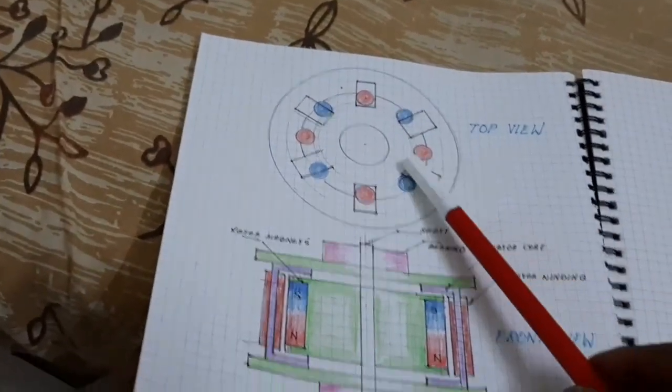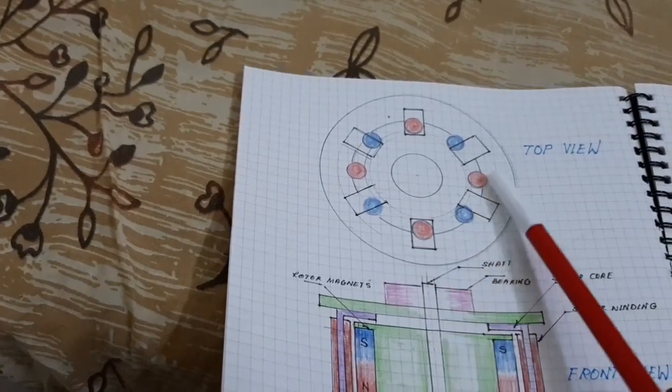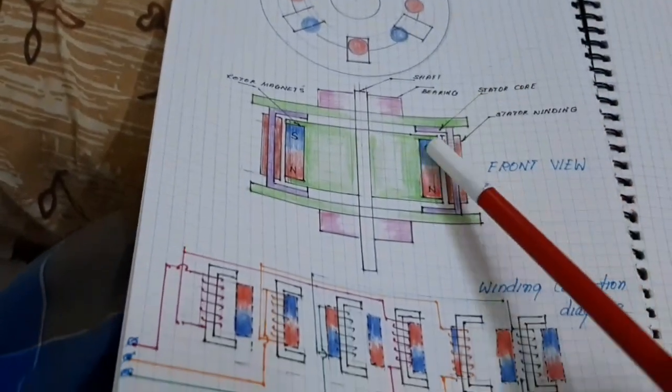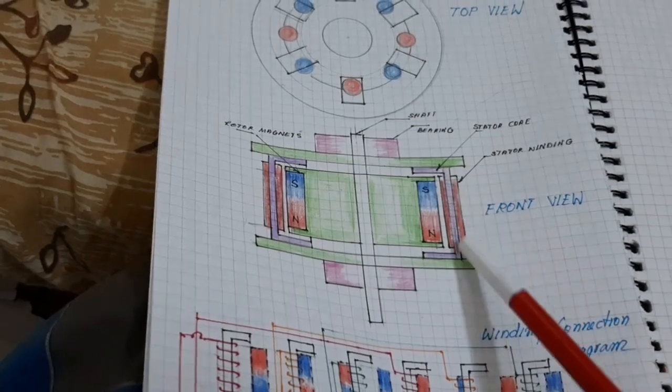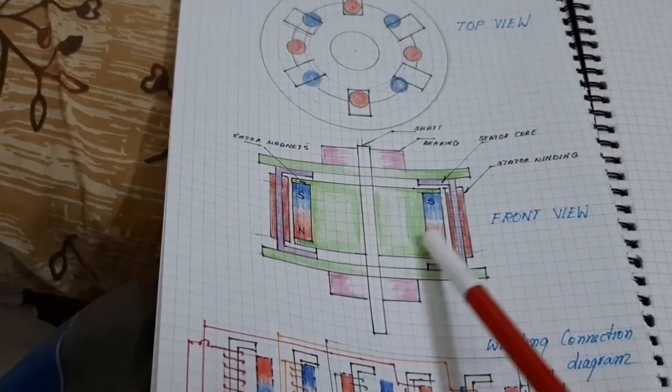Here, this is the 6-pole stator. Stator and the 8-pole rotor. This is the top view and this is the front view. Here, the stator poles and this is the winding. Here, this is the rotor poles.